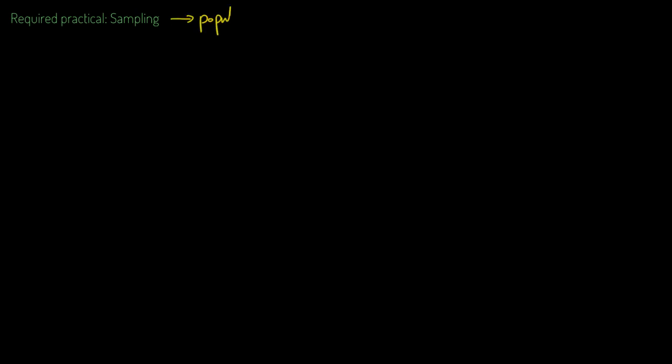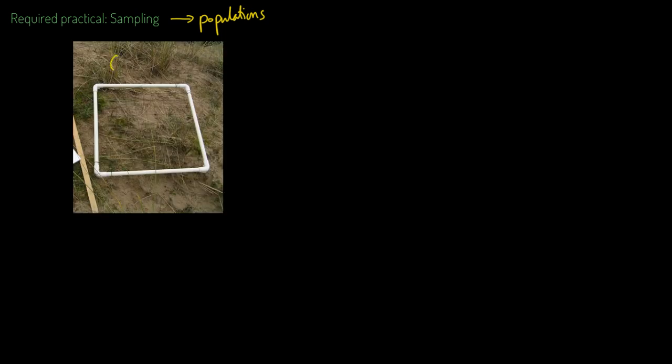Let's talk about this required practical all to do with sampling — different ways of assessing how a population changes. There are lots of different ways; I'm going to talk through the two most common. Nearly every way involves using one of these — this is a quadrat. Essentially it's a square. Some of them are fancy; this one has a wire net inside, though most school ones don't have that because it costs a little extra.